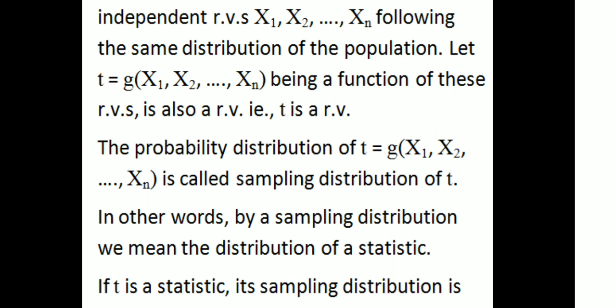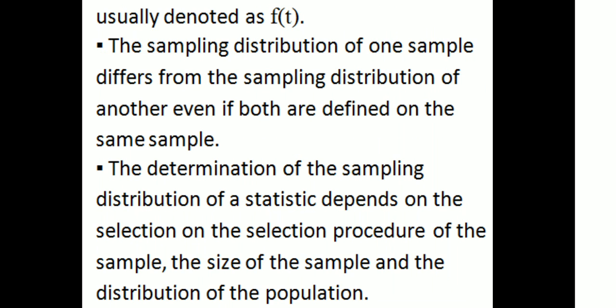The sampling distribution of t is a function of x1, x2, etc., xn. In other words, by a sampling distribution, we mean the distribution of a statistic. If t is a statistic, its sampling distribution is usually denoted as f(t). So t is the statistic and f(t) is its sampling distribution.